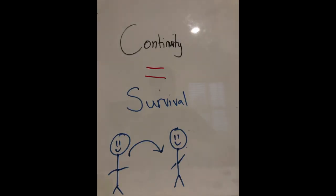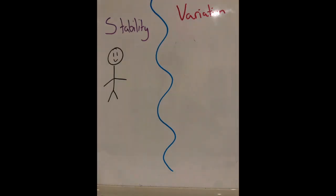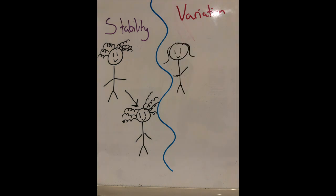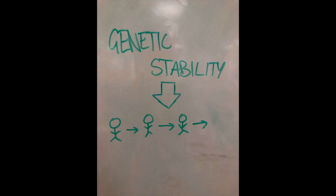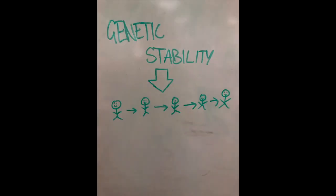Continuity of an organism refers to its ability to survive as a population, and this is supported through the processes of genetic stability and genetic variation. Genetic stability relies on the preservation of genetic material, supporting the handing down process for the continuity of a species.